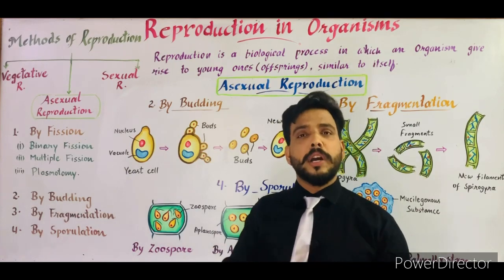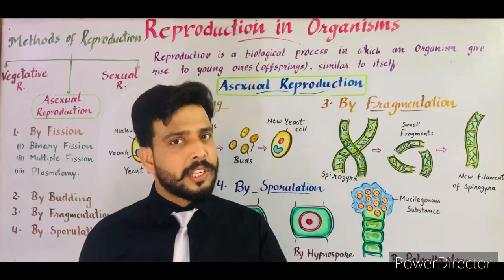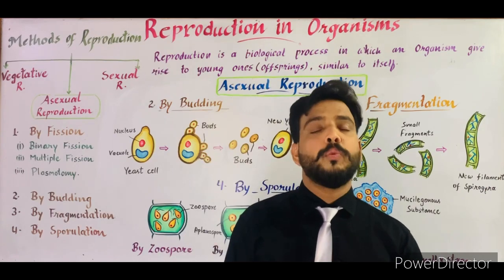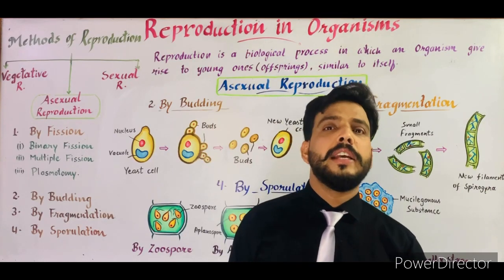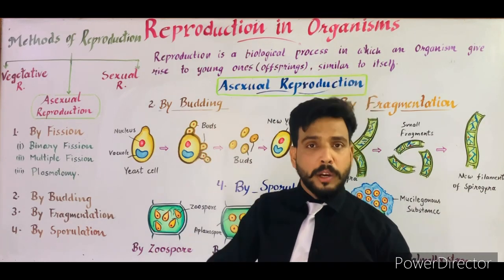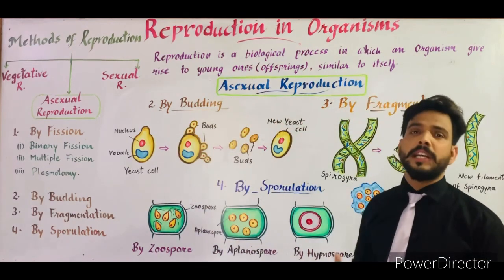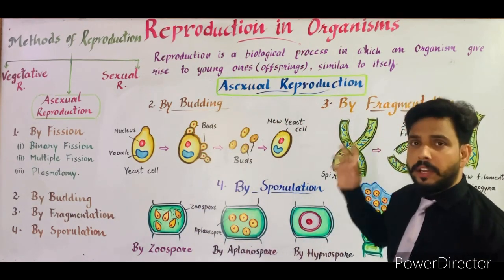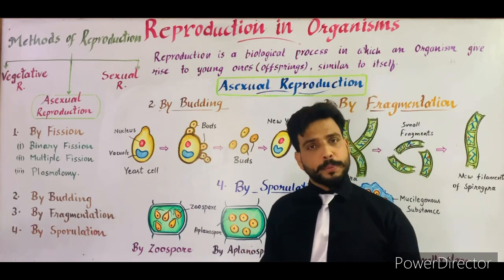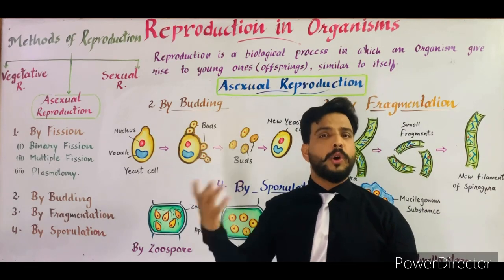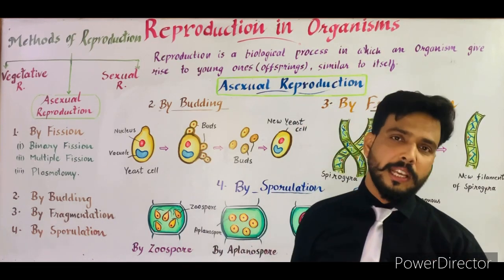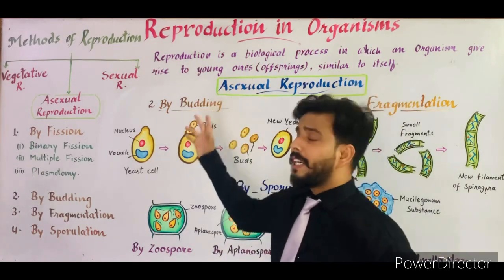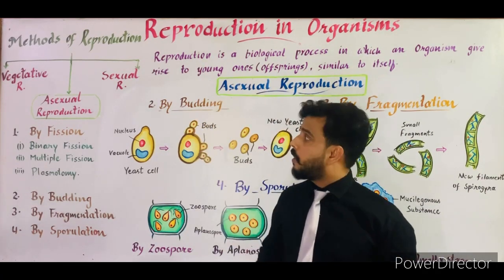This phenomenon is called reproduction. All the progenies — all the offspring of an organism — are similar to itself. So that is what reproduction is. Now, how many types of reproduction are there?